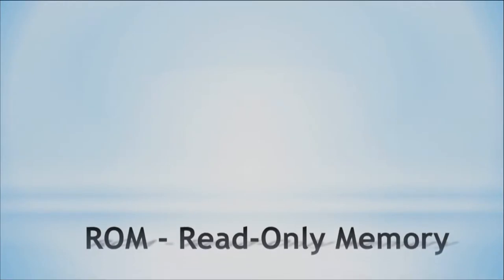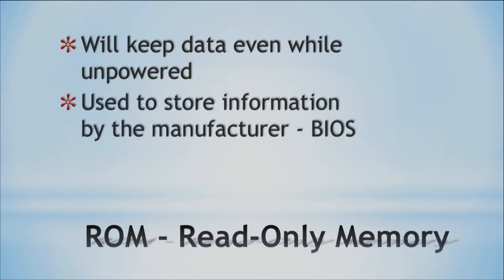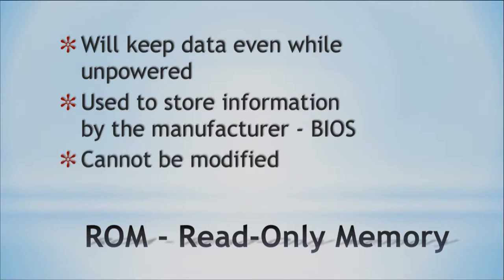Now we have read-only memory, or ROM. In ROM, data is kept even when there is no power. In RAM, if you unplug your computer, data is gone — that's why they tell you to save your work. If something happens and you haven't saved, it's gone. In ROM, it doesn't matter if you unplug the computer; the data stays. It stays forever, actually. It's used to store any information that has to remain in the computer for the life of the device, and it cannot be modified.